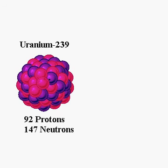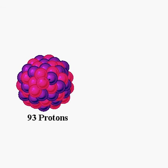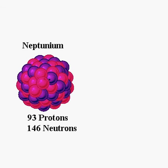So now this is no longer uranium because it doesn't have 92 protons anymore — it has 93. Atoms with 93 protons are called neptunium atoms. This particular neptunium atom still has 239 things in its nucleus. After all, it didn't spit out a neutron; it spit out an electron, and electrons don't count in terms of the nucleus — only protons and neutrons do. By simply changing a neutron into a proton, the total number of things in the nucleus didn't change.